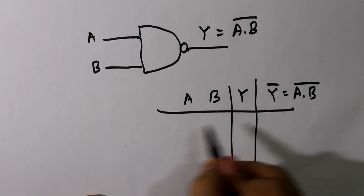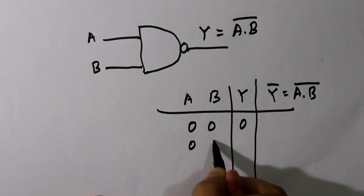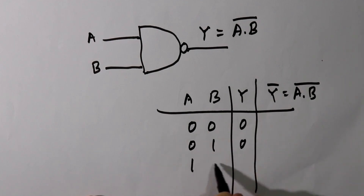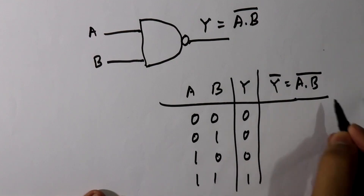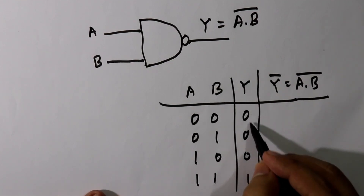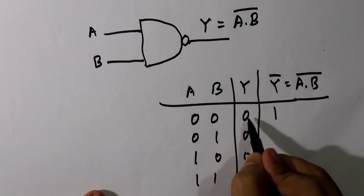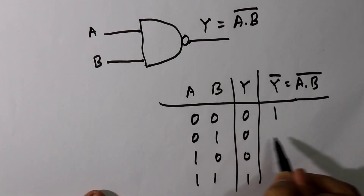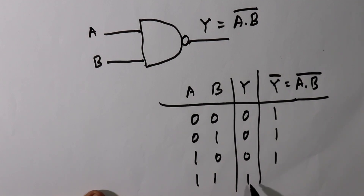The NAND gate AND output values are: 0·0=0, 0·1=0, 1·0=0, and 1·1=1. For the NAND gate final output we take the complement: complement of 0 is 1, complement of 0 is 1, complement of 0 is 1, and complement of 1 is 0.